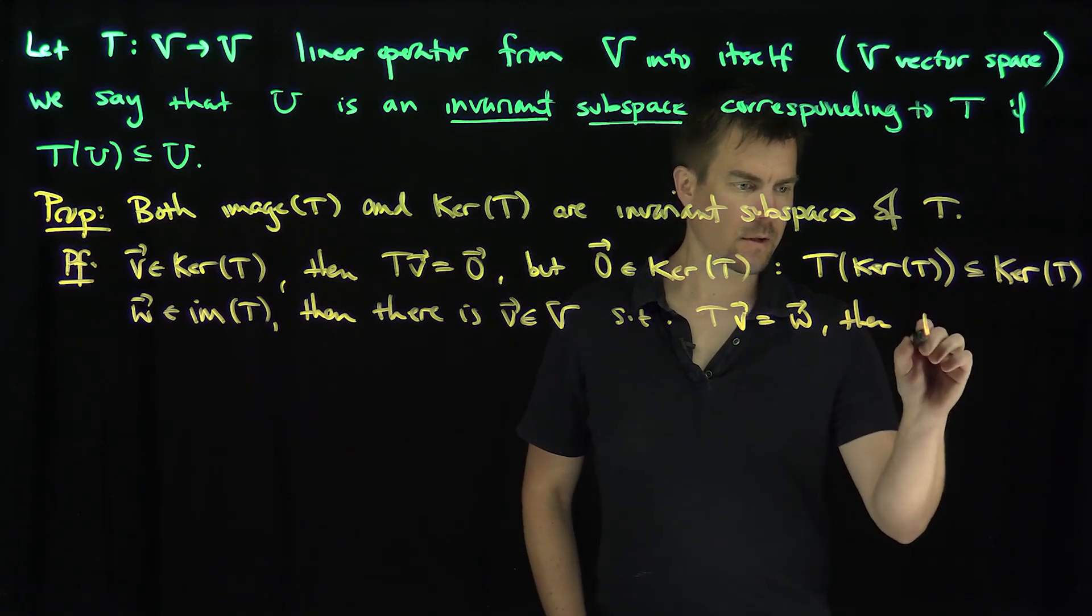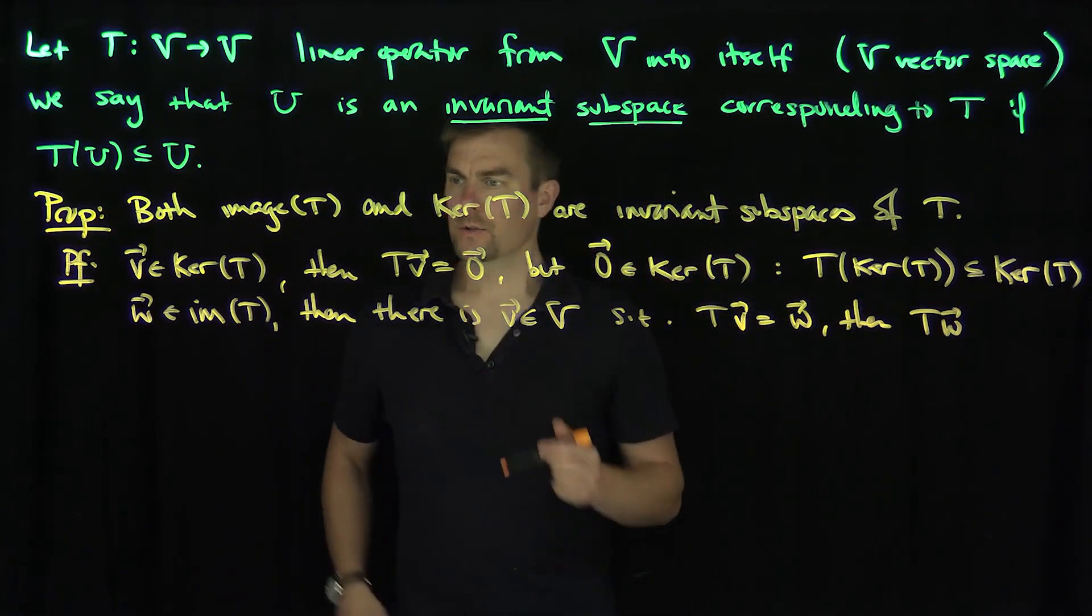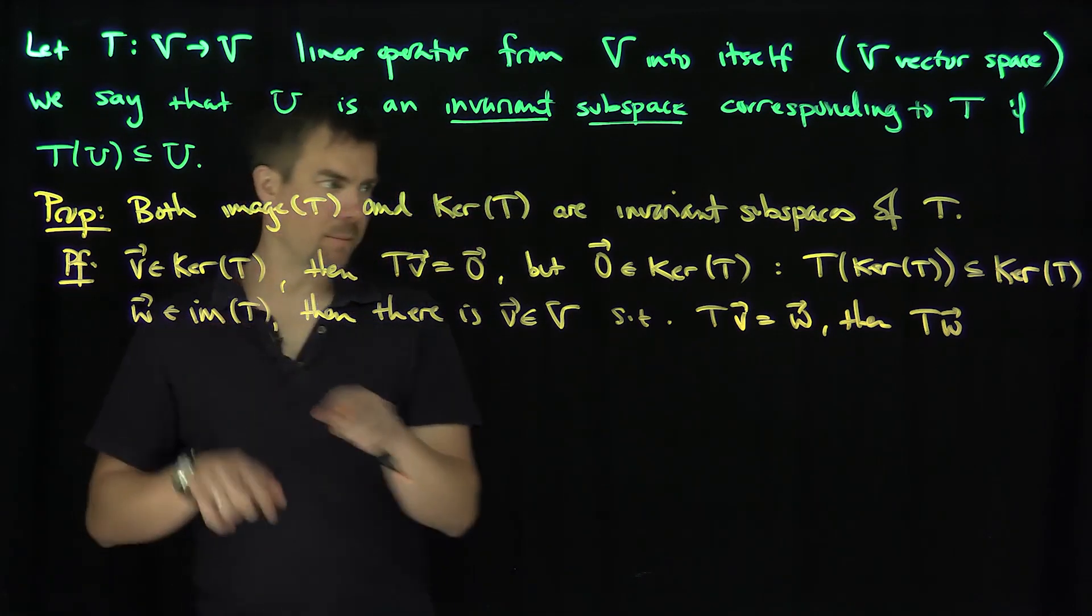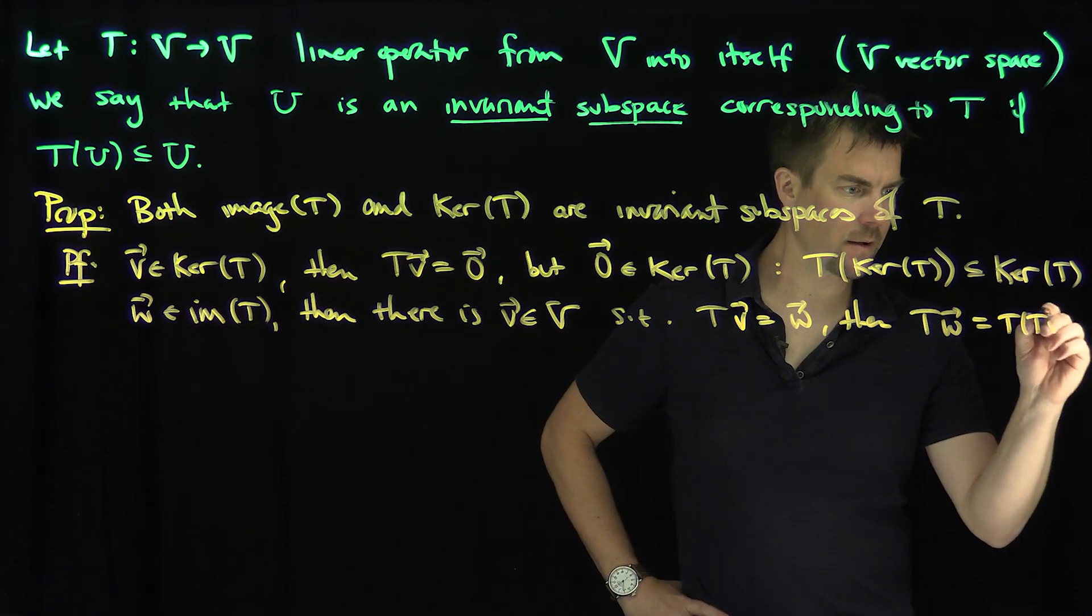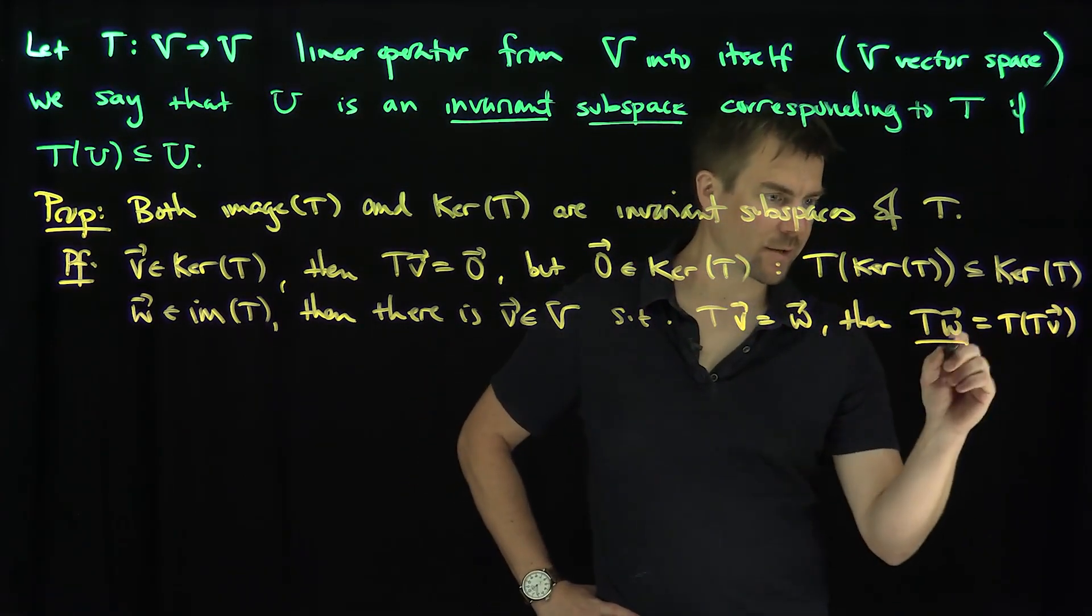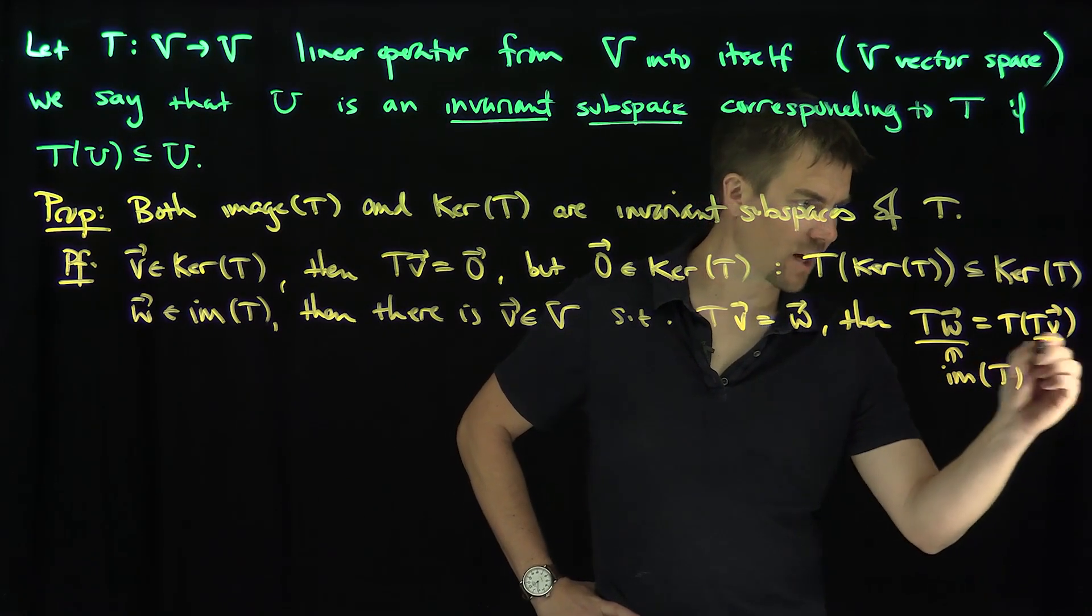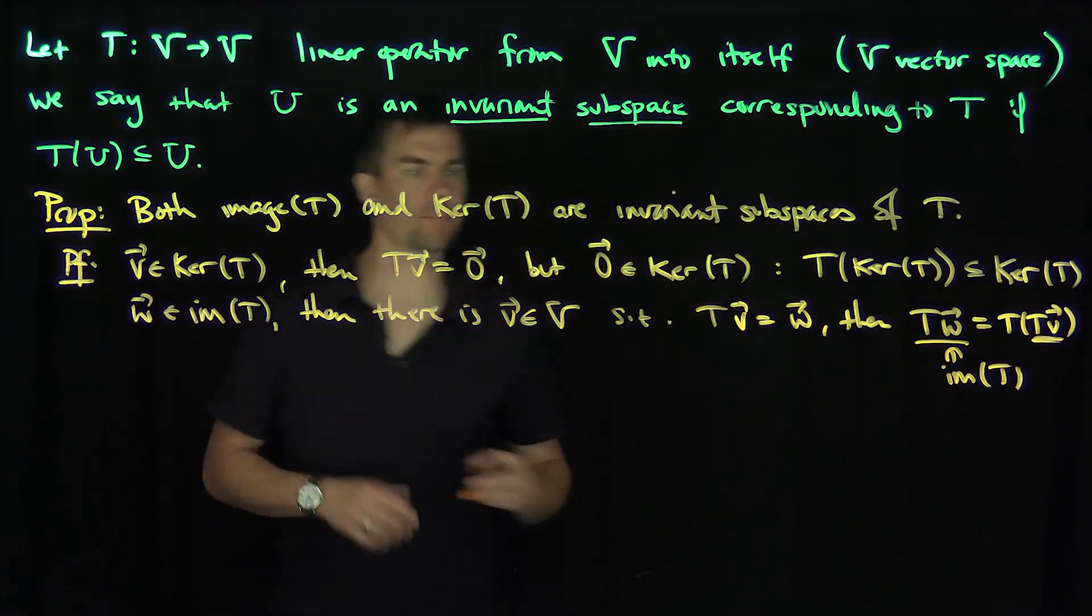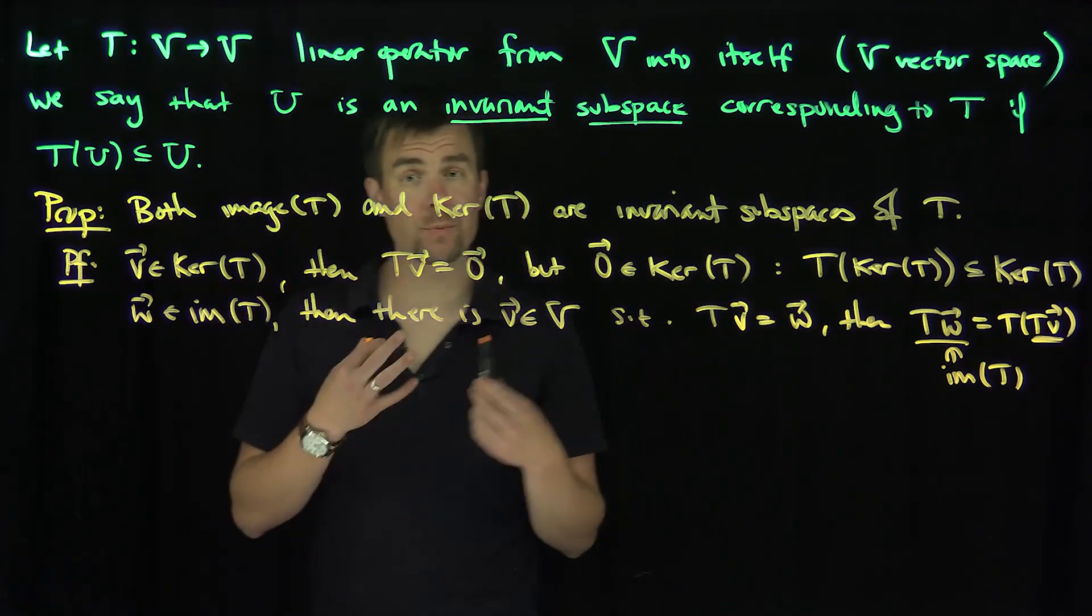Then T(w), right? So I need to show that T(w) is also in the image. Then T(w) is T(T(v)). And therefore that shows that T(w) is actually still in the image, right? So this is still in the image of T, because it comes from T(v). And so we have these two subspaces, the image and the kernel.